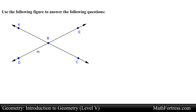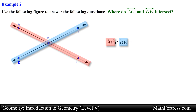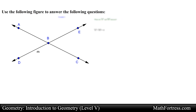Let's try the second example: where do line AC and line DE intersect? Using set notation this problem translates to line AC intersection line DE. Looking at the lines we see that they intersect at a common point — in this case point B. So line AC intersection line DE is equal to point B.